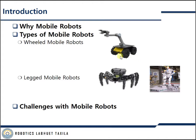One is the wheeled mobile robot, which typically consists of a rigid body base or chassis and a system of wheels which provide motion with respect to the ground. Other rigid bodies may also be connected by any means of joints.